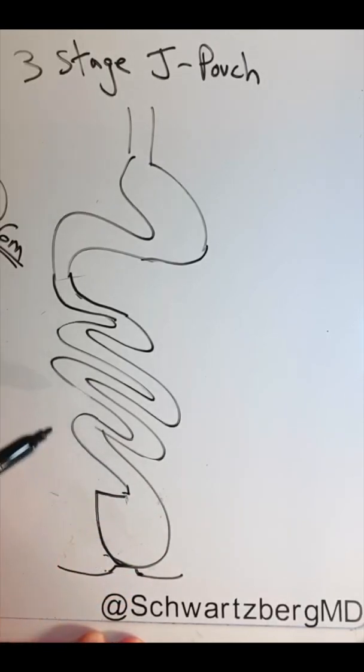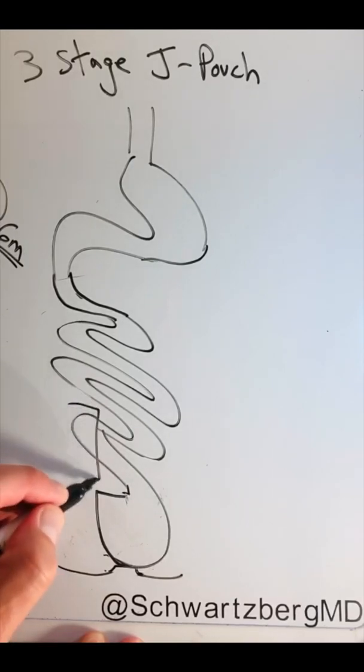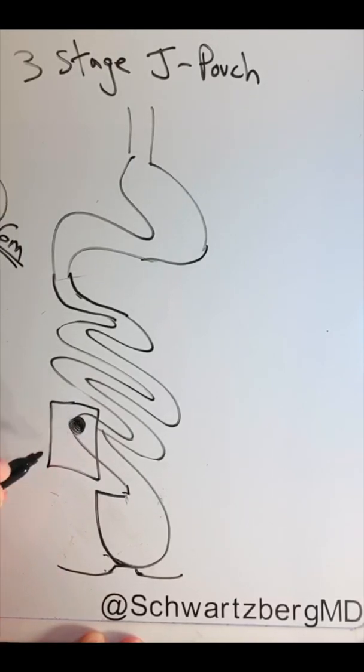Now to let this heal, you then take this piece of intestine and make that into a diverting loop ileostomy.